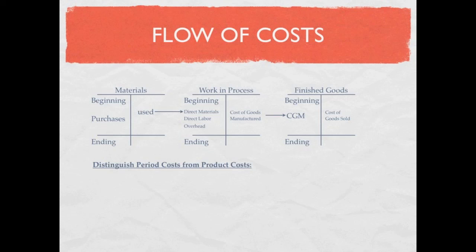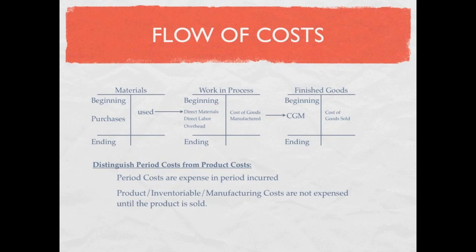One other thing to recognize is the difference between period cost and product cost. Period costs are expensed in the period they are incurred — these are your operating expenses, your selling and admin expenses. Product costs are materials, labor, and overhead, and they are not expensed until the product is sold. Once the product is sold, we call that cost of goods sold, and that's our expense.